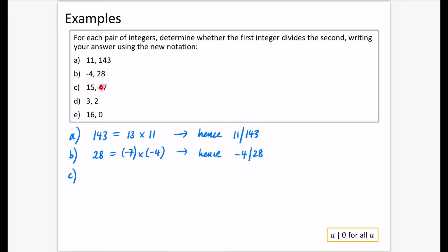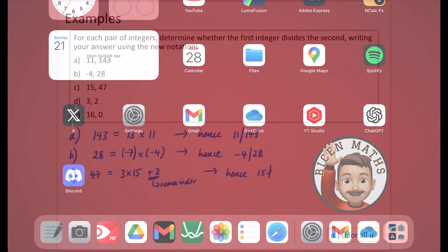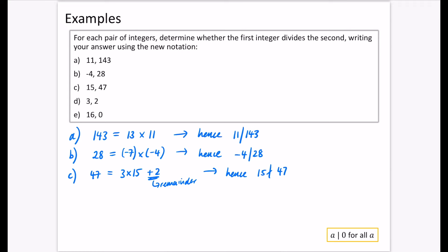Now for part C of the question, this is pretty obvious, right? 15 is not a factor of 47. And that's because 47 is going to be 3 lots of 15, which is 45 plus 2 more. So that means that there is some kind of remainder here. Hence, we're going to say that 15 is not a factor. And I'm going to use that new language. Hence, 15 does not divide 47 that we have in this case.